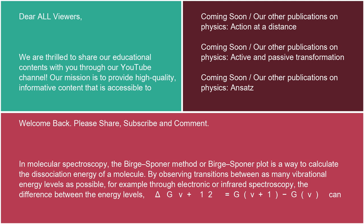In molecular spectroscopy, the Birge-Sponer method or Birge-Sponer plot is a way to calculate the dissociation energy of a molecule by observing transitions between as many vibrational energy levels as possible.